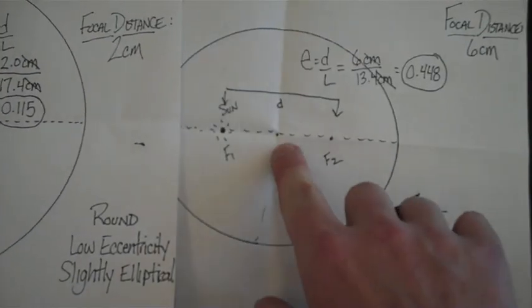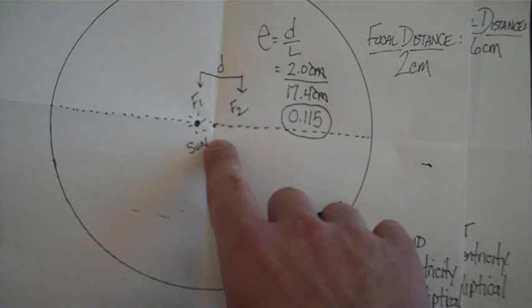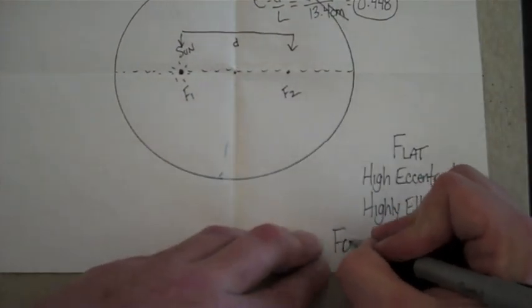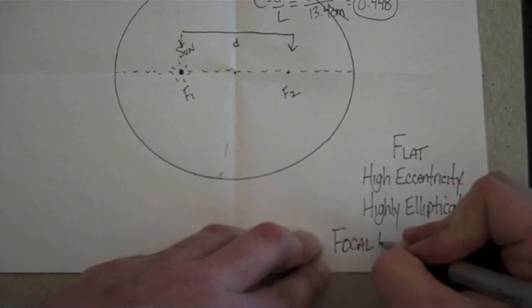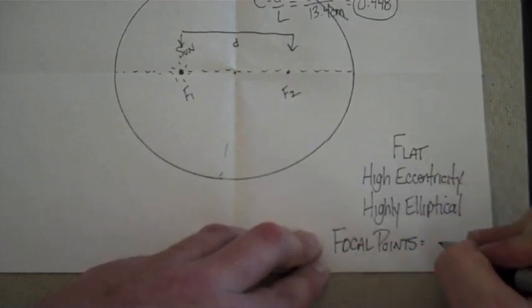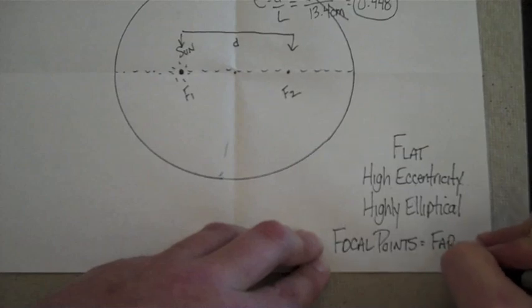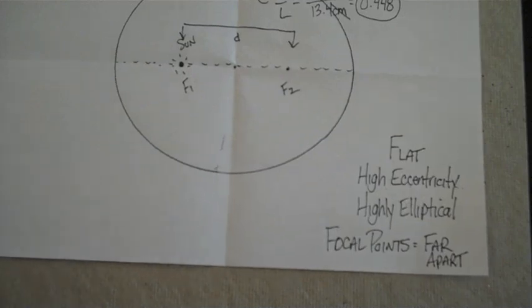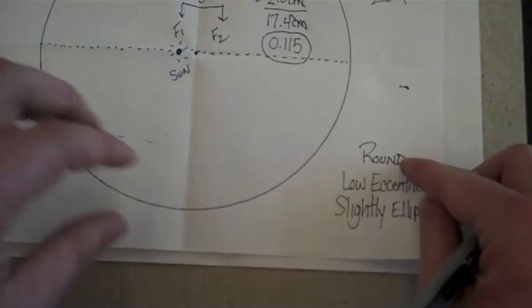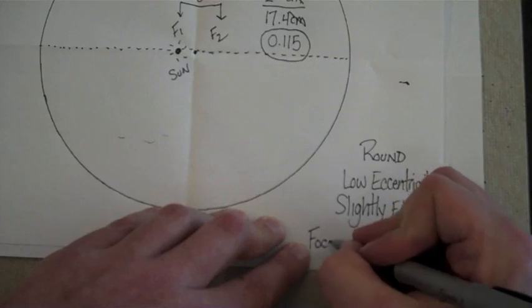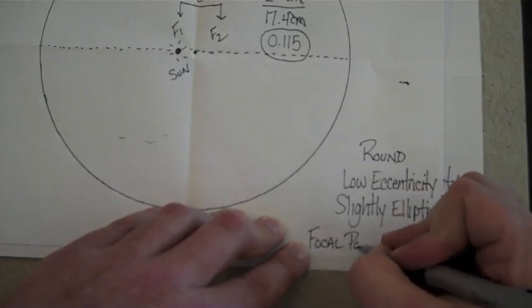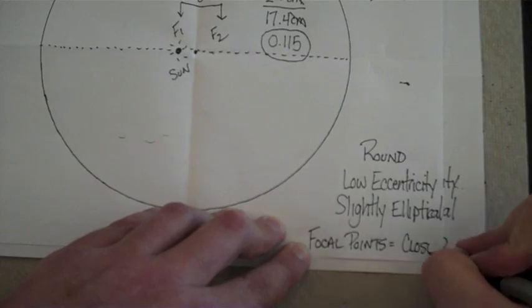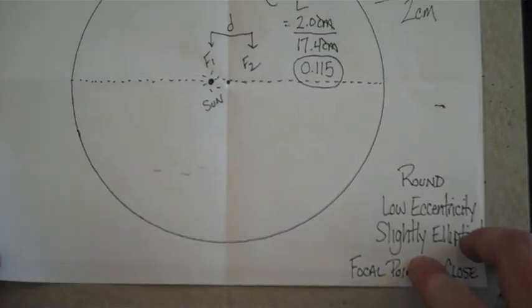What determines this is how far your focal points are going to be. If your focal points are close together, or if they're going to be far apart. Focal points are far apart. Your round ellipse focal points are close together. So there's a big difference between the shape of the orbits here.